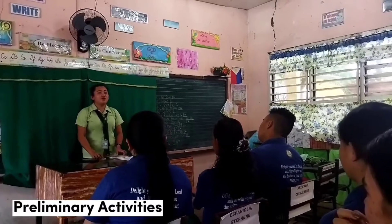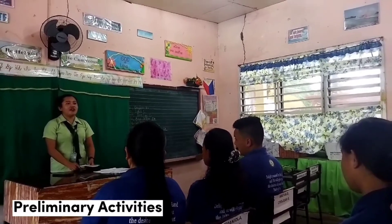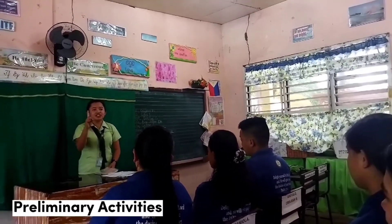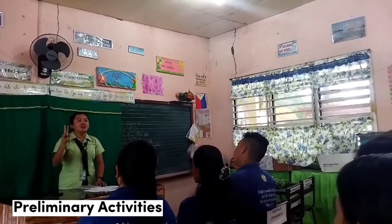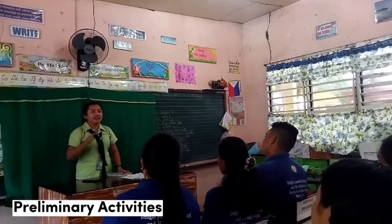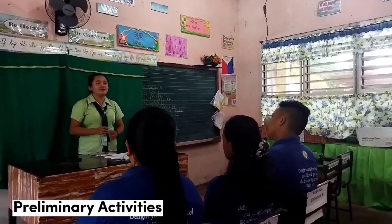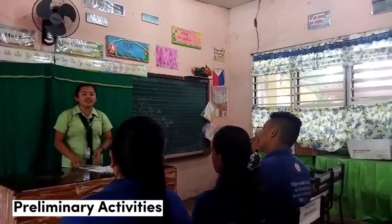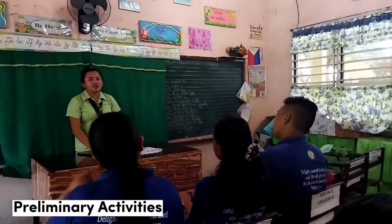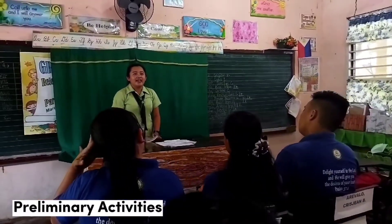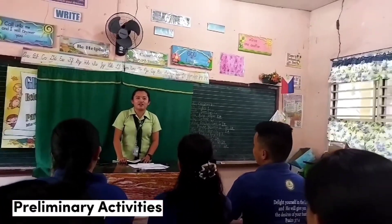So, before we begin, let me introduce to you our five classroom rules. First, listen when your teacher is talking. Second, follow directions carefully. Third, raise your right hand if you want to say something and do not answer incorrectly. Fourth, respect yourself and others equally. And fifth, be honest, humble, and cooperative.